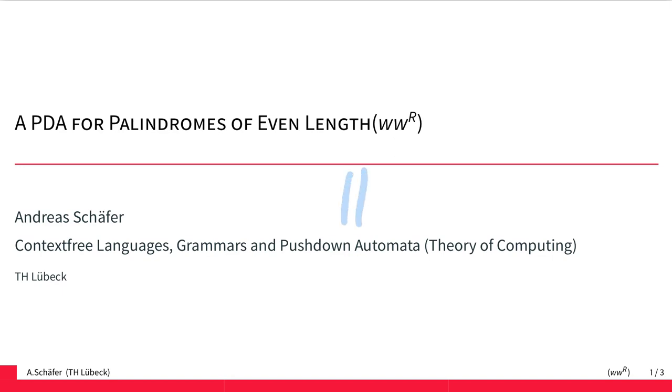This is our second how-to on constructing a pushdown automaton, a PDA, for a given language. The language we're looking at now is the language of palindromes of even length.